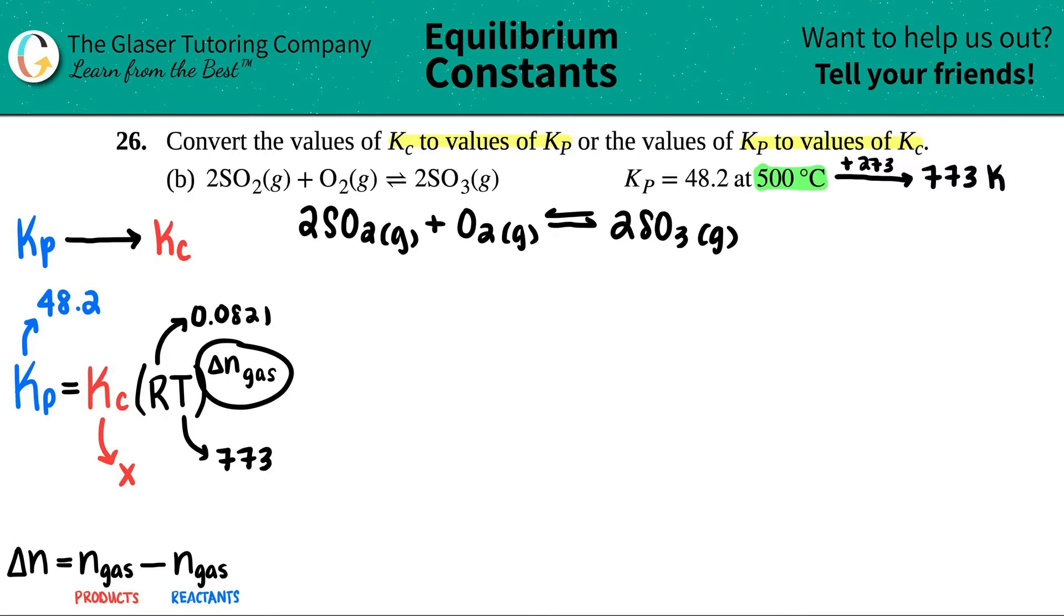Now let's do the delta n gas. I wrote down here what the delta n was. It's just your N gas of your products minus the reactants. So you could just think of products minus reactants, but take note that we only care about the gas phases. So just go back to your balanced equation and just figure out which ones are gases.